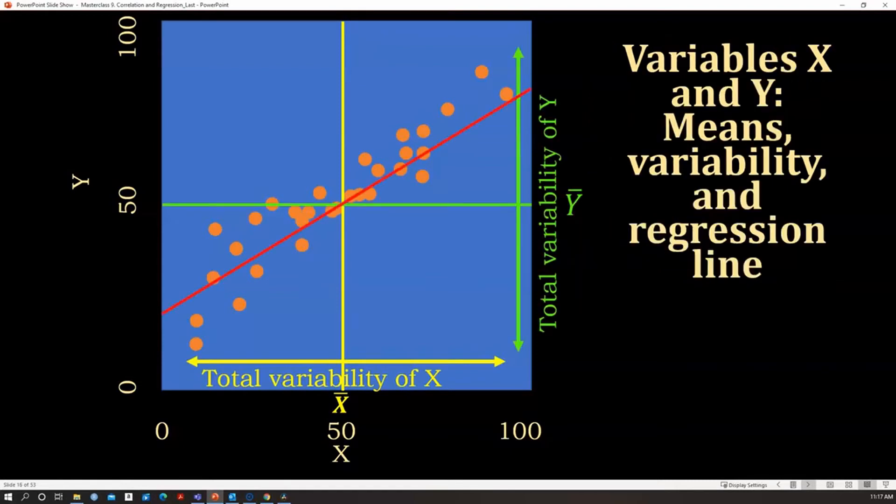Now, we have the variability of X, the variability of Y, and now we added another element, which is the regression line, in red.